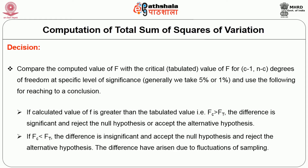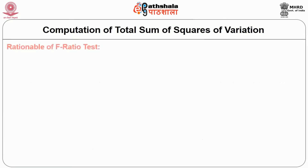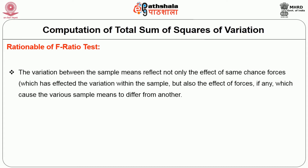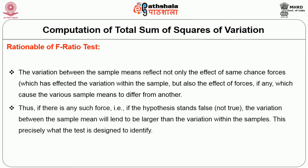The difference may have arisen due to fluctuations of sampling. Rationale of the F-ratio test: the variation between sample means reflects not only the effect of chance forces which have affected the variation within the samples, but also the effect of forces, if any, which cause the various sample means to differ from one another. Thus, if there is any such force — that is, if the null hypothesis is false — the variation between sample means will tend to be larger than the variation within the samples. This is precisely what the F-test is designed to identify.